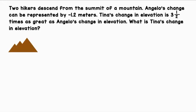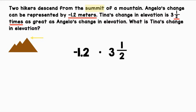Two hikers descend from the summit of a mountain — the summit is the top. Angelo's change in elevation can be represented by negative 1.2 meters. Tina's change in elevation is 3.5 times as great as Angelo's change in elevation. What is Tina's change in elevation? Let's start with Angelo's change: negative 1.2 meters. Tina's change is 3.5 times as great, so let's multiply by 3.5.